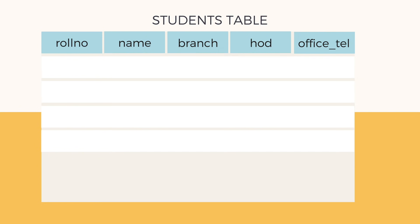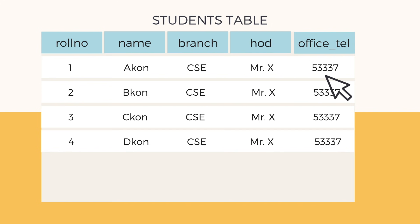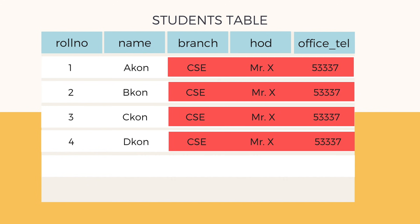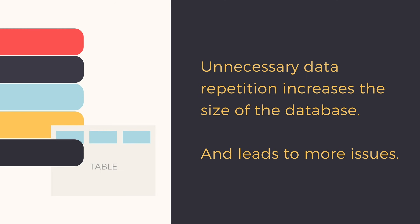Now let's put data of four computer science students into this table. We'll add roll numbers one, two, three, and four, put in the students' names, their branch name, the name of the HOD, and the department telephone number. In this case, the branch name, the HOD name, and the telephone number are the same for all entries. Whenever a new student entry is created, this entire information is repeated — this is data redundancy — and it not only increases the size of our database unnecessarily but leads to multiple other issues.